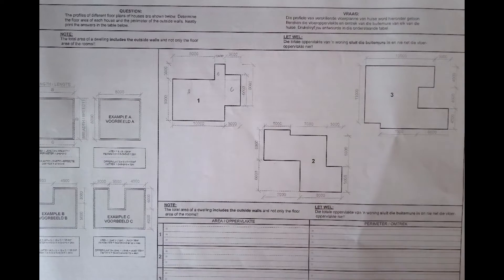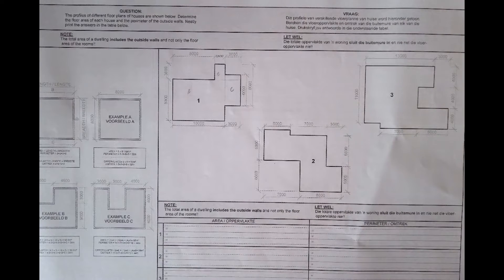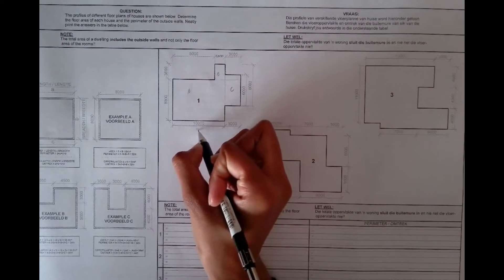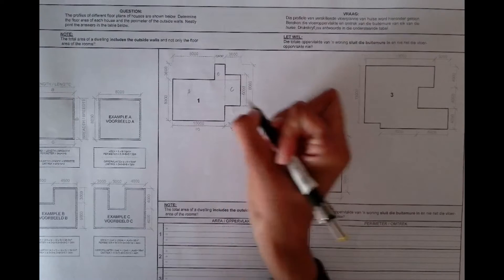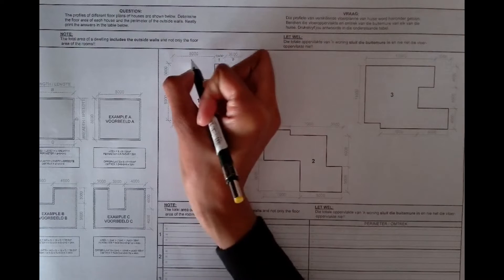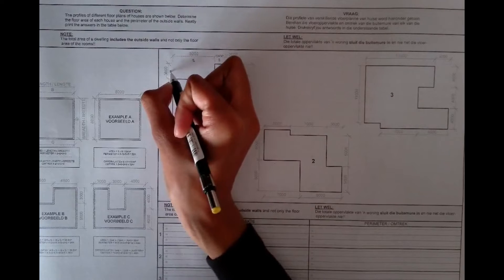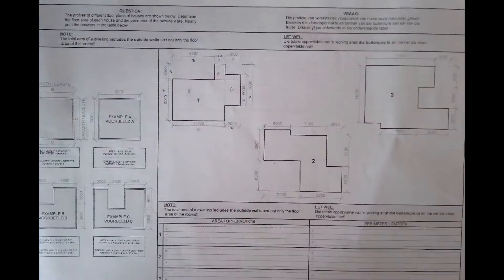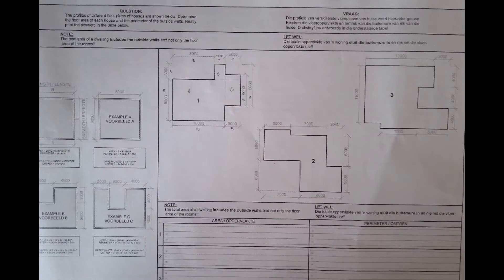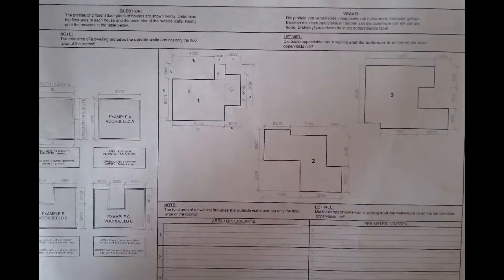Before you calculate the area, you must convert all your dimensions to meters. We divide by 1,000, so 10,000 becomes 10, 8,000 becomes 8, 3,000 becomes 3, 6 becomes 6, 2,000 becomes 2, and so on. Now all of my dimensions have been converted to meters.